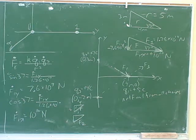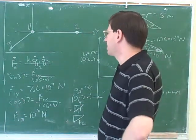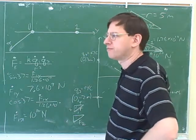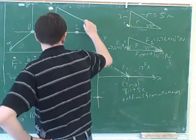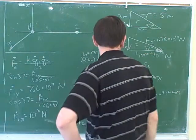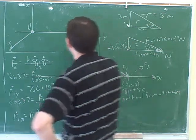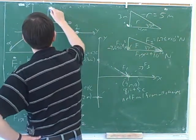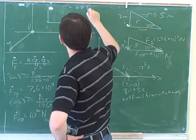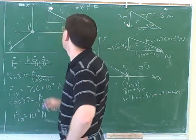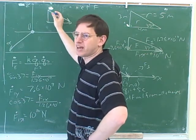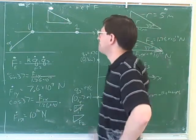Adding the x components and the y components gives you the x and y components for the overall net force. Then you would have one more triangle — a triangle for the overall net force. You would know the x component and the y component of the overall net force, and you could use trigonometry to find the angle and the hypotenuse. For example, we could use inverse tangent to find the angle, and the Pythagorean theorem to find the overall magnitude. This is a very typical type of question.